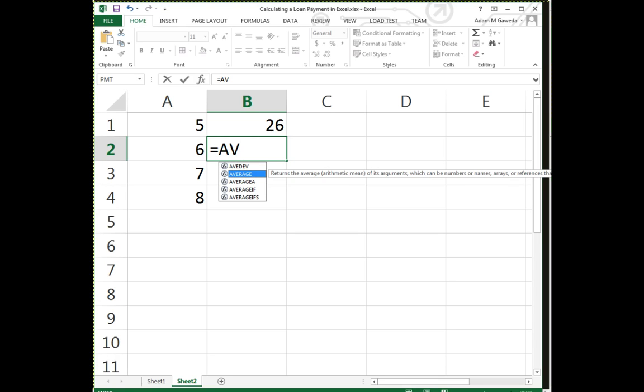You can see it gives me a little brief description. Returns the average arithmetic mean of its operators. Well, I said that this was like autocomplete. So what that means is I can double click on this and it's going to automatically put the rest out there for me, which is really nice.